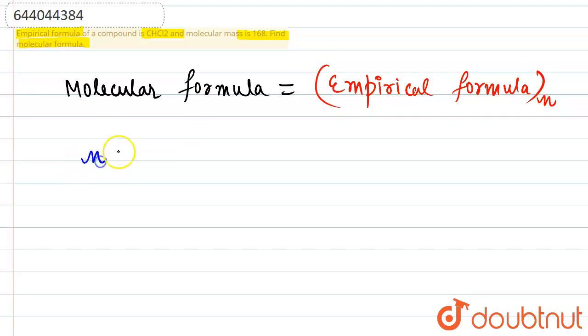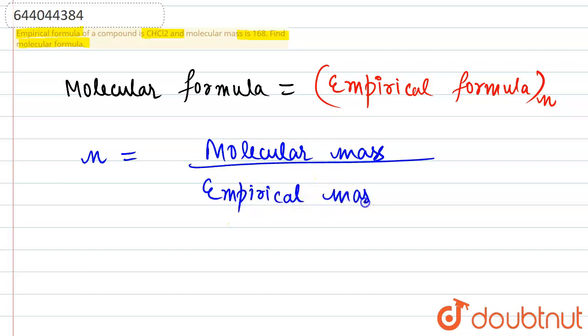So n is basically expressed as molecular mass divided by empirical formula mass. The molecular mass is given to us, that is 168, and empirical mass we can calculate from the formula given as CH Cl2. Empirical formula is given to us, so this is empirical formula.